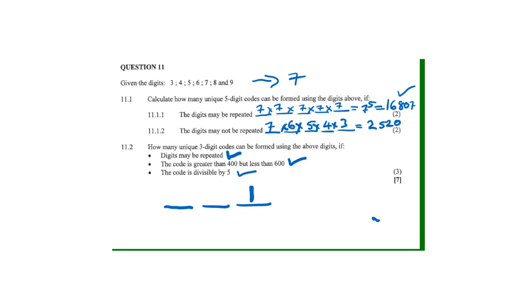The code must be greater than 400 but less than 600, so the first digit can only be a four or a five — that gives two options. For the middle digit, repetition is allowed, so any of the seven digits can be used. Multiplying: two times seven times one equals 14 different codes.